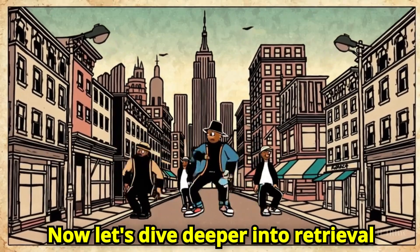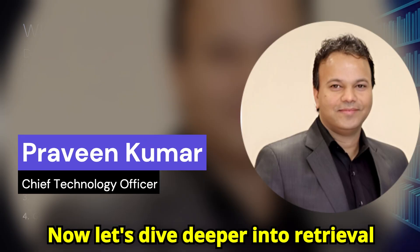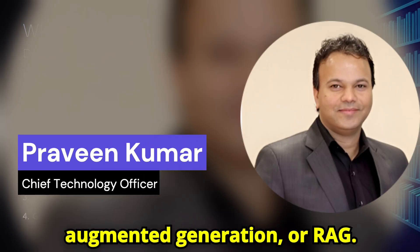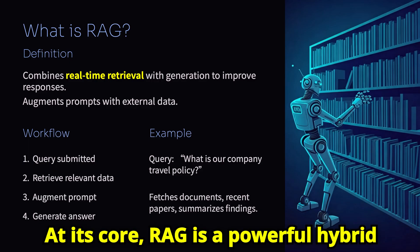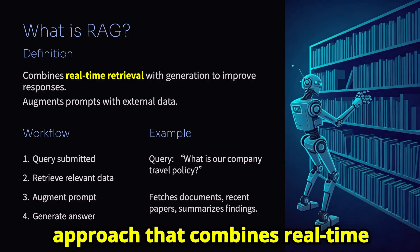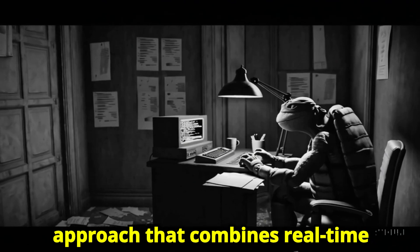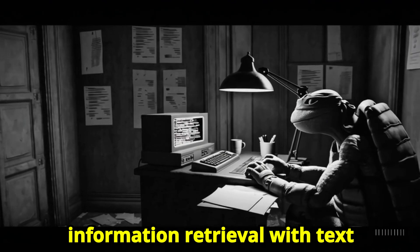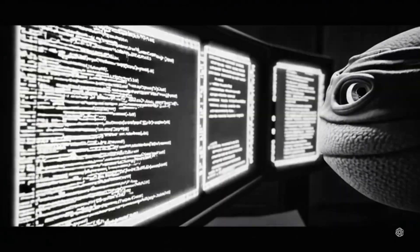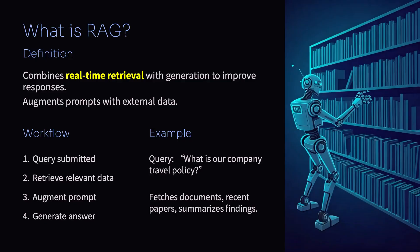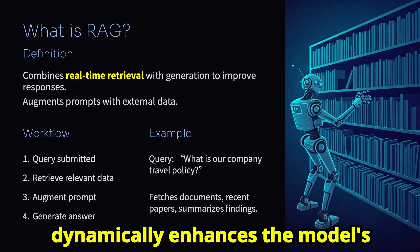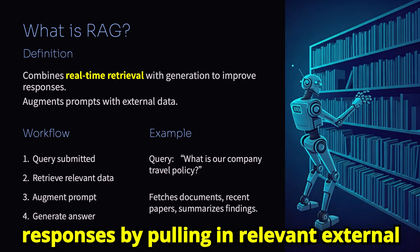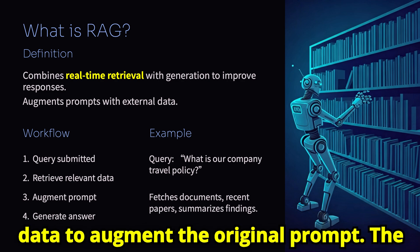Now let's dive deeper into retrieval augmented generation, or RAG. At its core, RAG is a powerful hybrid approach that combines real-time information retrieval with text generation capabilities. What makes RAG special is how it dynamically enhances the model's responses by pulling in relevant external data to augment the original prompt.